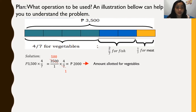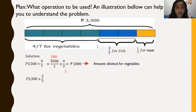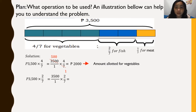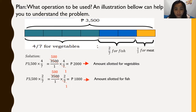Now let's compute for fish. We have 3,500 times 2/7. That becomes 3,500 over 1 times 2/7. Cancel 3,500 divided by 7 to get 500, and 7 becomes 1. So 500 times 2 is P1,000 — that is the amount allotted for fish.